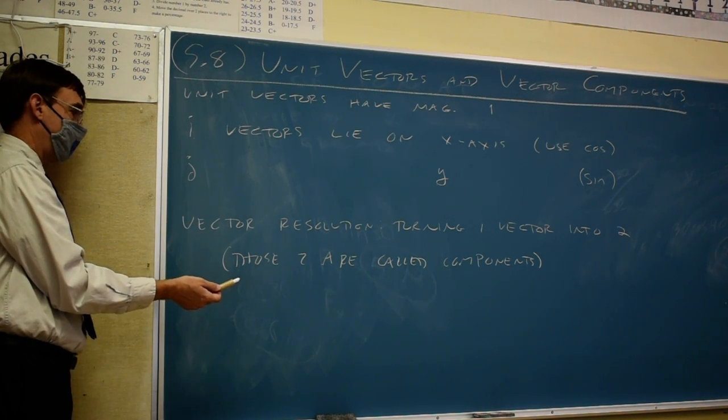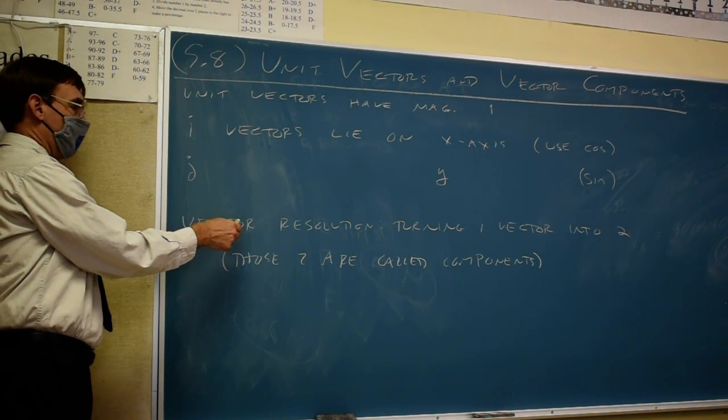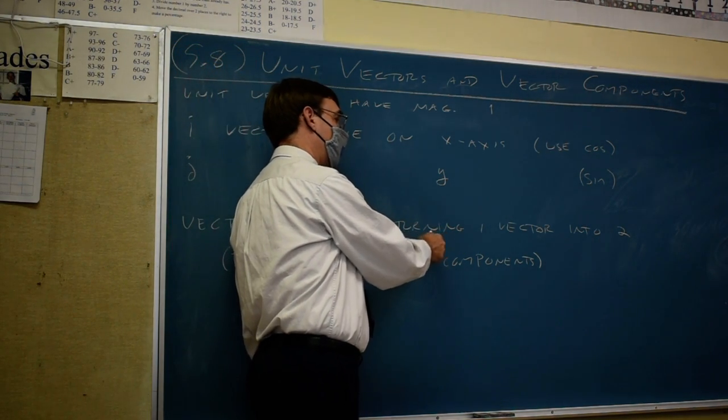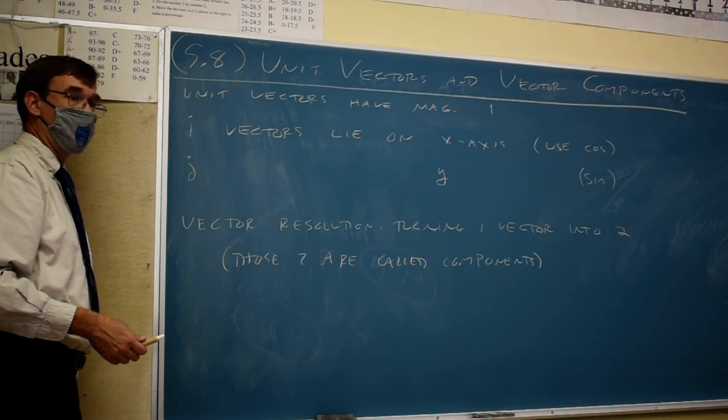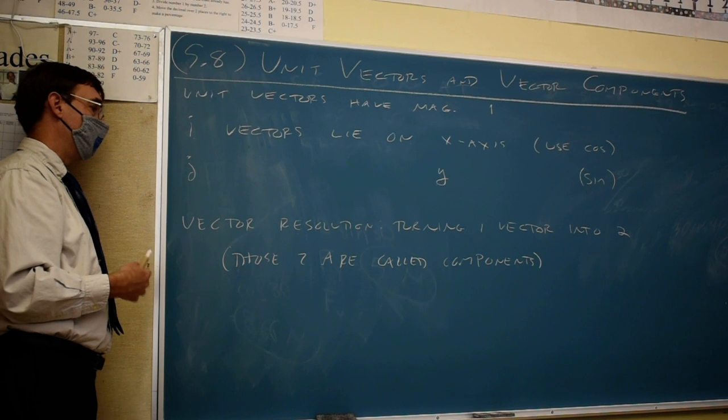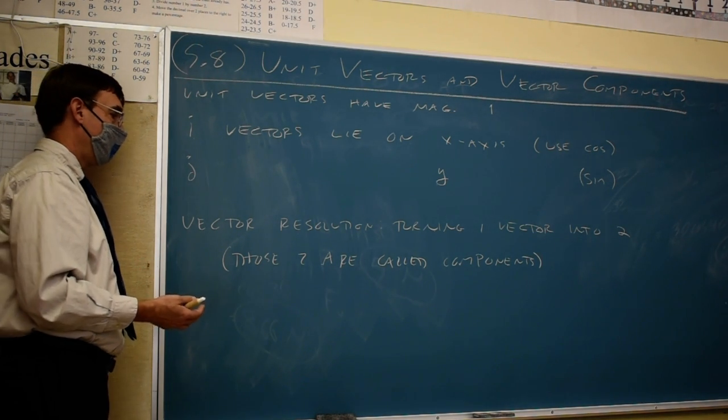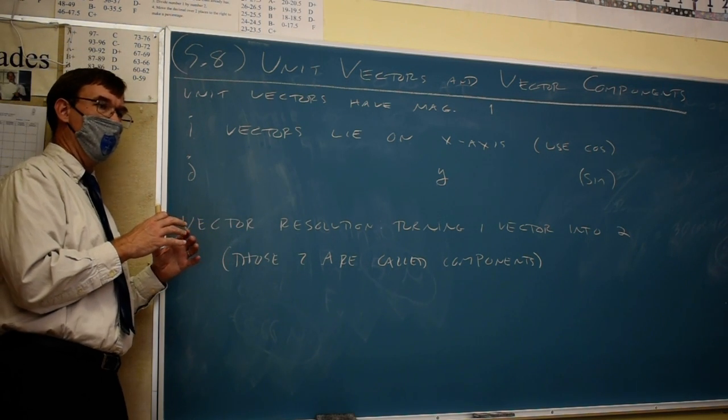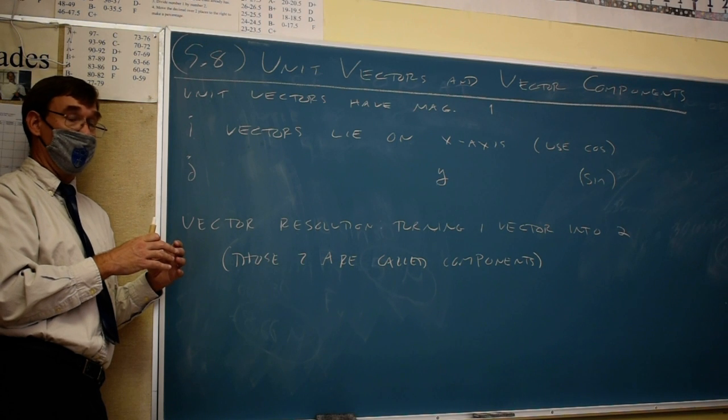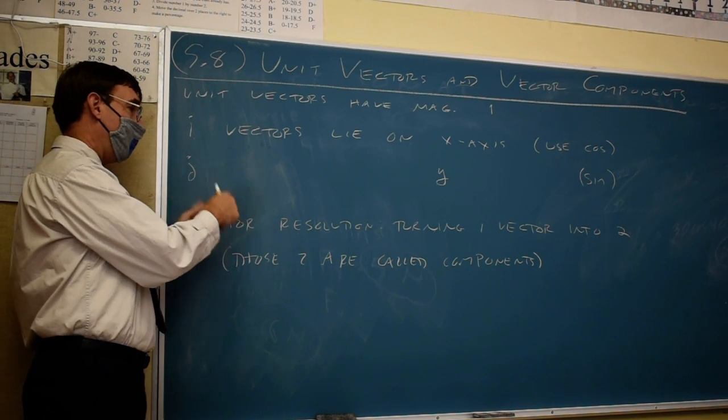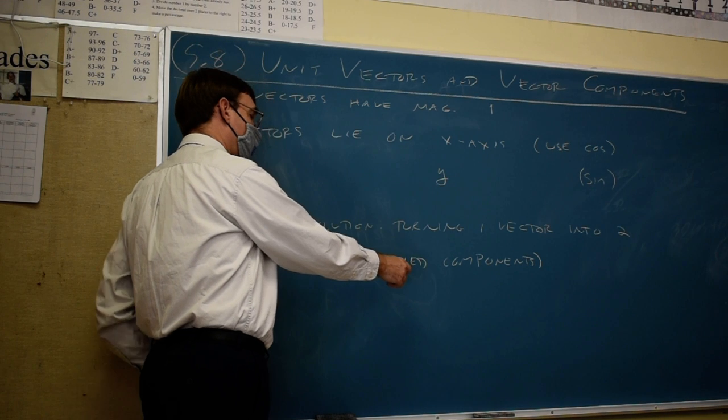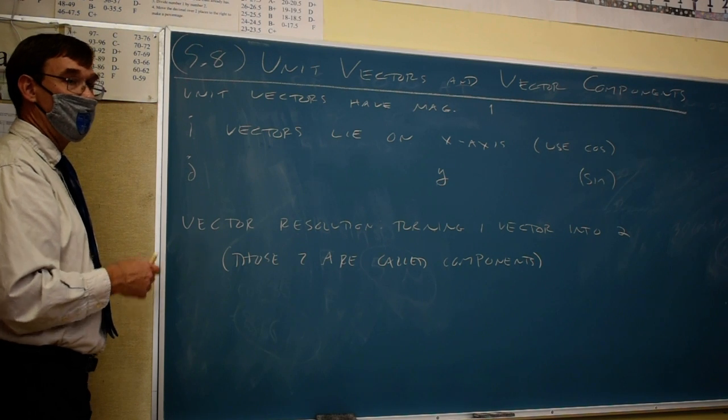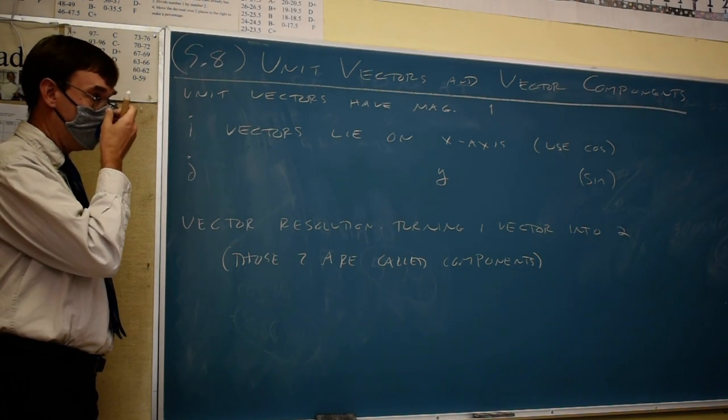So, like we learned in physics about a couple hours ago, there's a process called vector resolution, where we can turn one vector into two. You spent last night's trig homework turning two vectors into one. We're going to just do the reverse. We're going to turn one vector into two. What's it called when you have two vectors and turn them into one? Resultant. What we're going to do is take one vector and turn it into two. Those two are going to be called components.